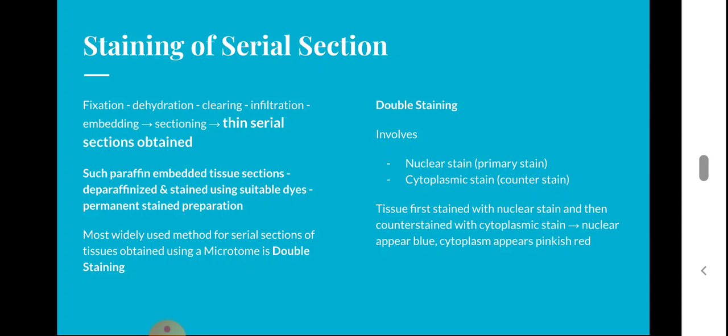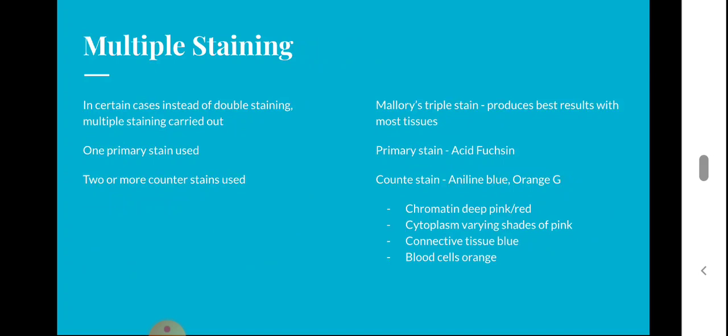The tissue is first stained with a nuclear stain and then counter-stained with a cytoplasmic stain. The nucleus will appear blue and the cytoplasm will appear pinkish-red, allowing us to differentiate the nucleus and the cytoplasm. This is the use of double staining — to differentiate different parts of the cell using a nuclear primary stain and a cytoplasmic counter stain.